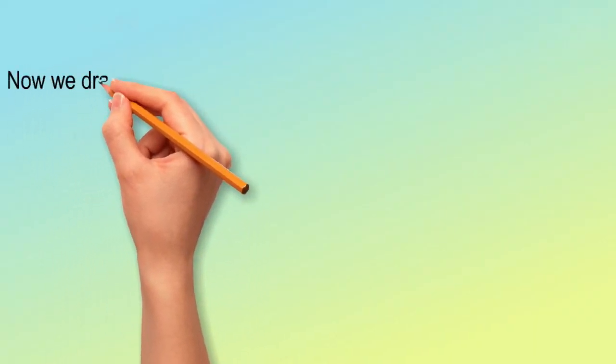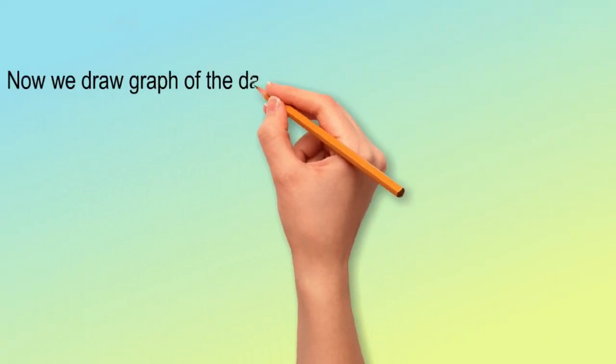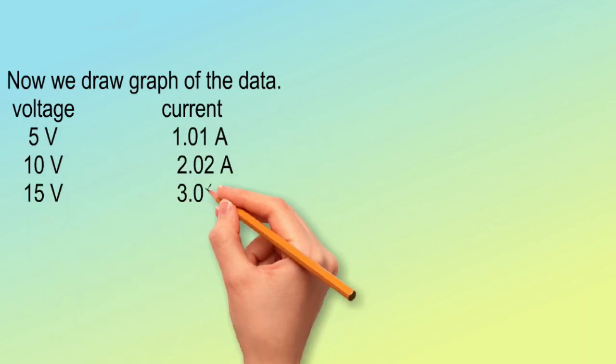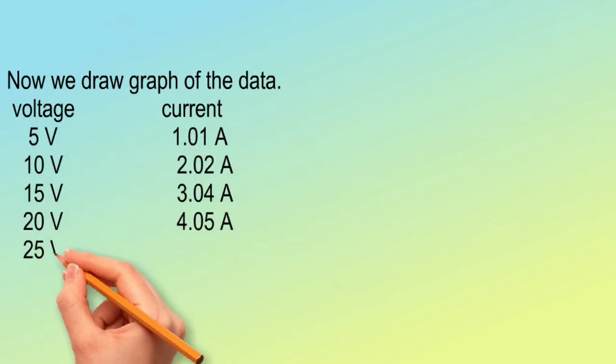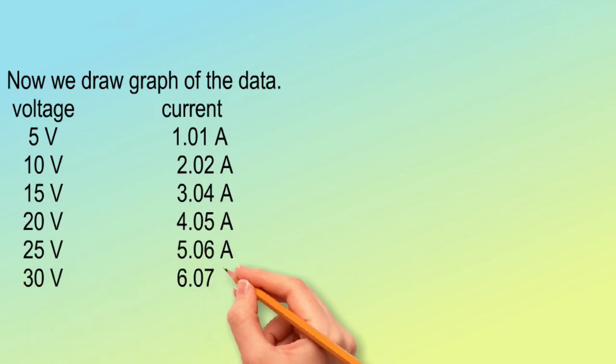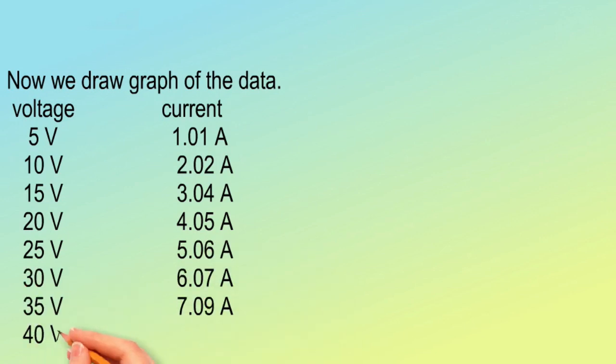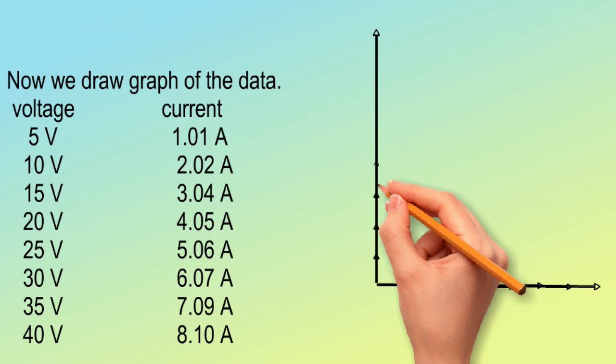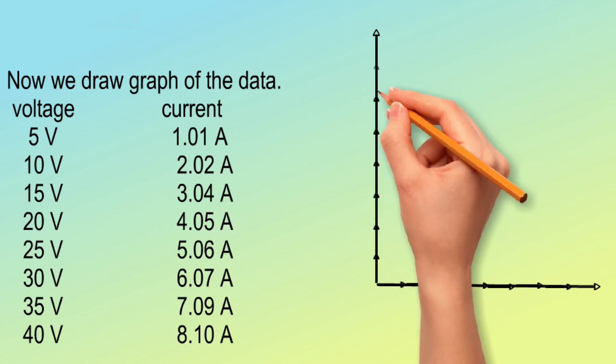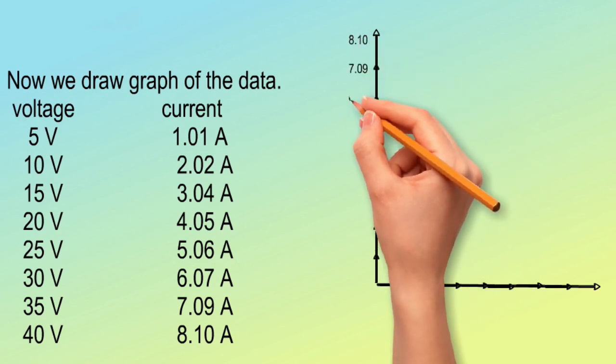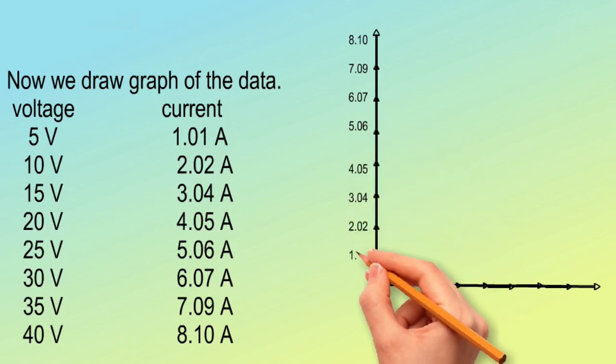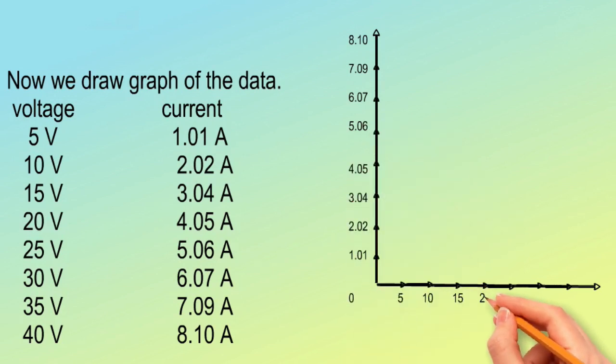Let's graph the data that was seen. We collect each voltage and current value. We plot the data with the voltage along the x-axis and the current along the y-axis. When we connect all the points, the result is a straight line. The V-I graph for ohmic materials is, as you can see, a straight line.